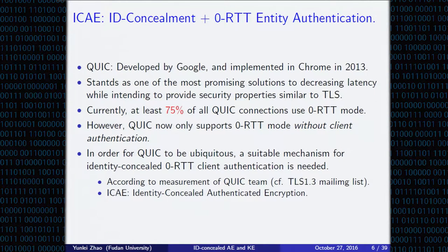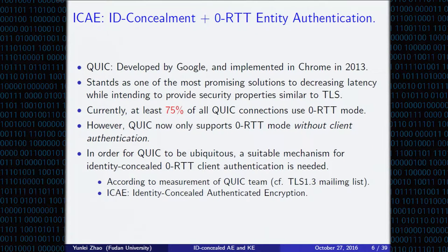QUIC is developed by Google and has already been implemented in Chrome since 2013. It stands as one of the most promising solutions to decreasing latency while intending to provide security properties similar to TLS. Currently, at least about 75% of all QUIC connections use the zero RTT model. However, QUIC now only supports zero RTT without client authentication. According to the QUIC team, a suitable mechanism for identity-concealed zero RTT client authentication is needed.